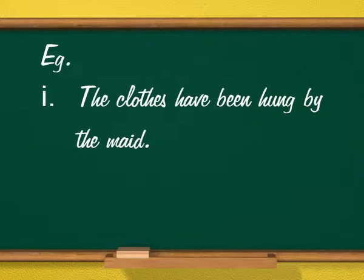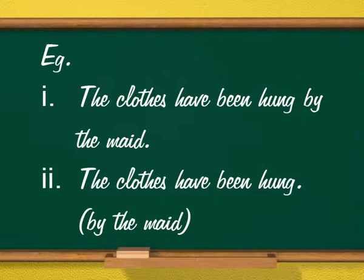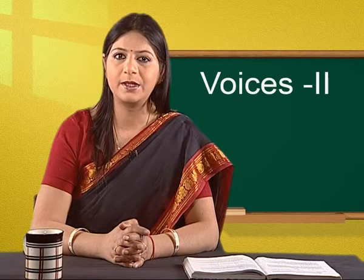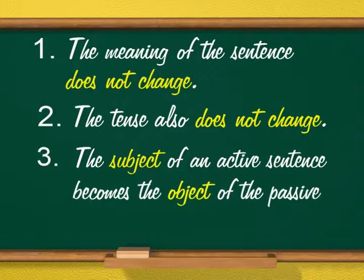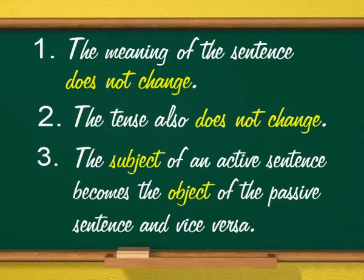For example: first, 'The clothes have been hung by the maid.' Second, 'The clothes have been hung.' In both cases, the subject clothes is not doing any work. In the first, the work is done by an agent. In the second, the doer is not mentioned. This becomes important when we change from one voice to another. We have to remember: first, the meaning of the sentence does not change; second, the tense also does not change; third, the subject of an active sentence becomes the object of the passive sentence and vice versa.